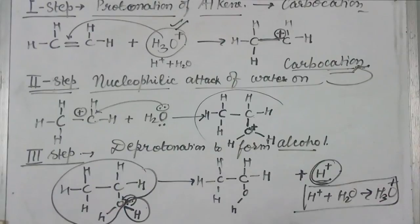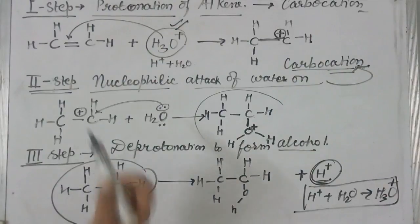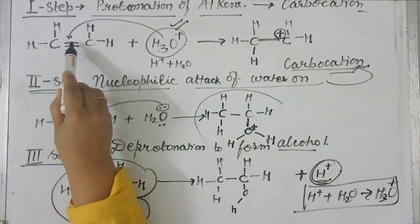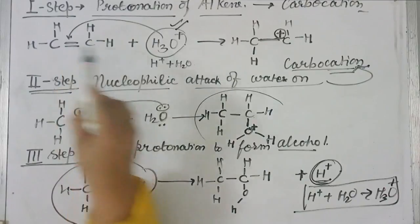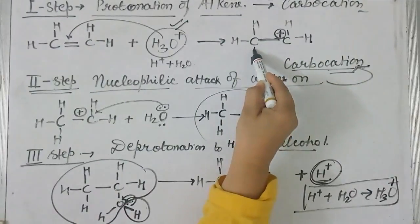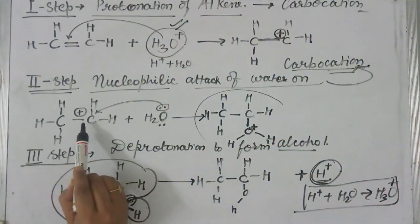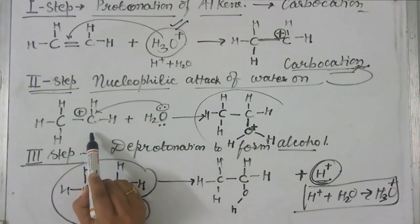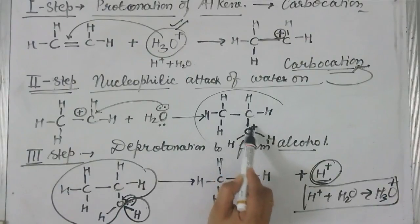The very important part which I have observed that students are not understanding is whenever you are going through a mechanism, just observe what is happening actually. All we can see here is that the only kind of changes are the double bond is turning into the bond pair, or the lone pair is turning to the bond pair.